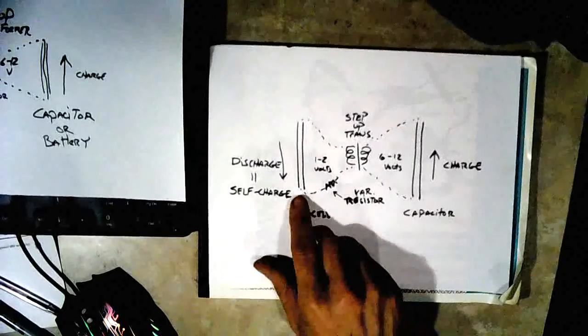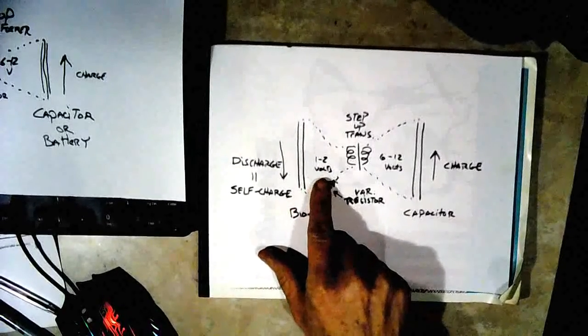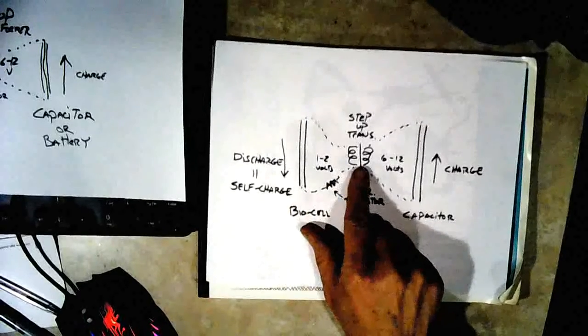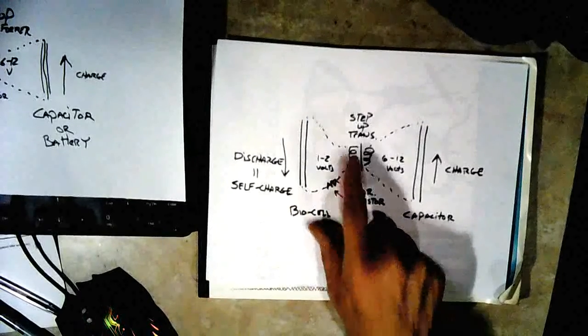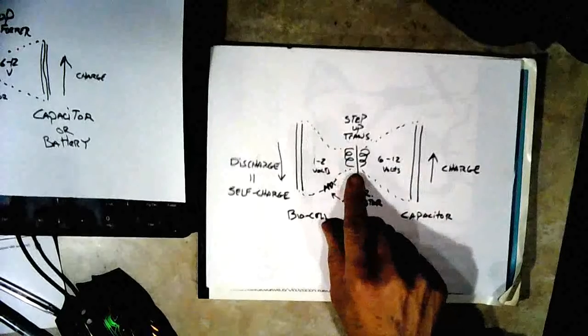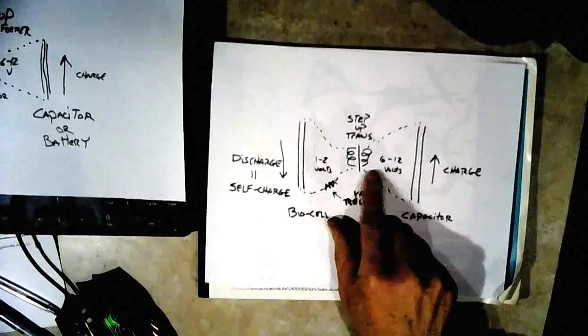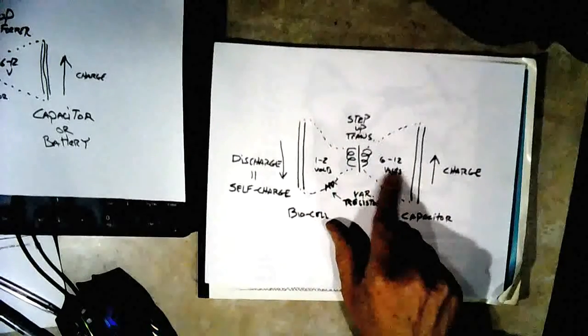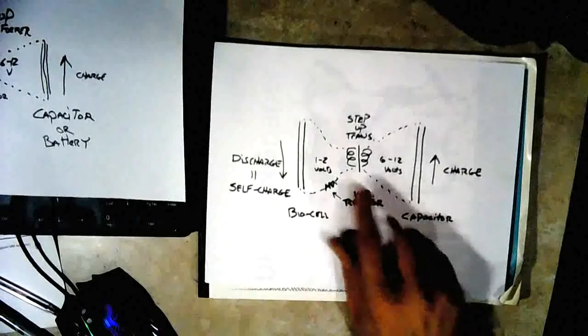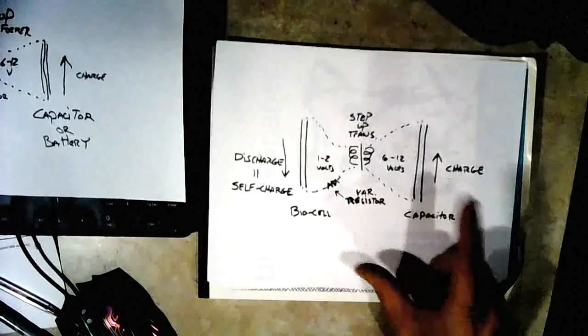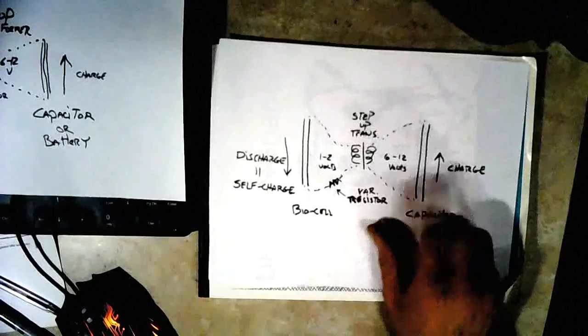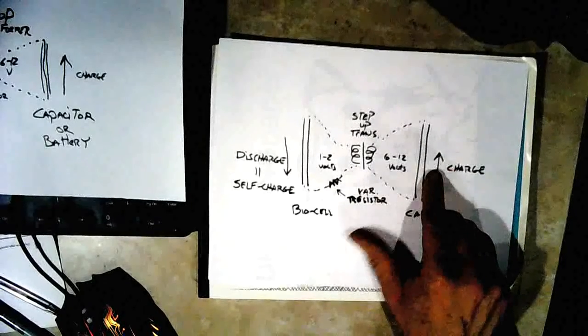Let's say you have a biocell here producing one to two volts. If you use a step-up transformer, you could connect the biocell to one side of the transformer and step that voltage up to six to twelve volts, then connect that to a capacitor over here and use that to charge the capacitor up.